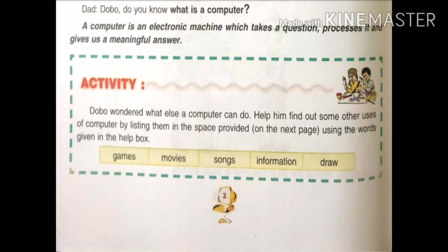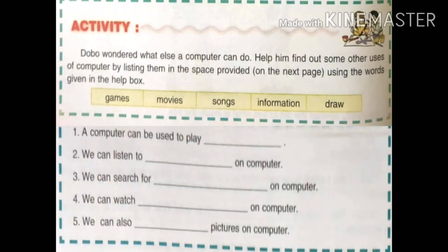Dobo wondered what else a computer can do. Help him find out some other uses of a computer by listing them in the space provided, using the words given in the help box. In the help box, the words given are: games, movies, songs, information, and draw.